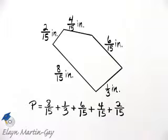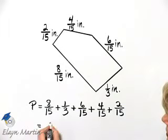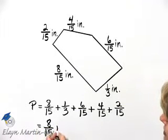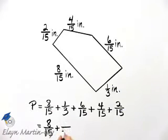Now we need to find this sum. We have all denominators of 15 except this one. The least common denominator, though, is 15, so 3 times what number gives a product of 15? Well, 3 times 5 is 15, so 5 times 1 is 5.